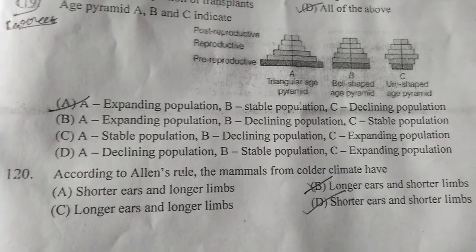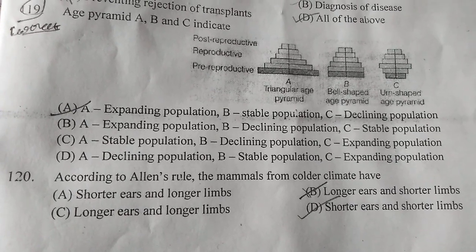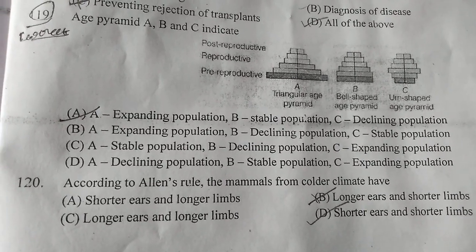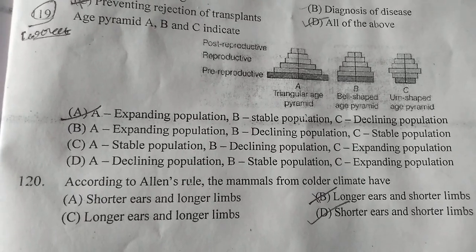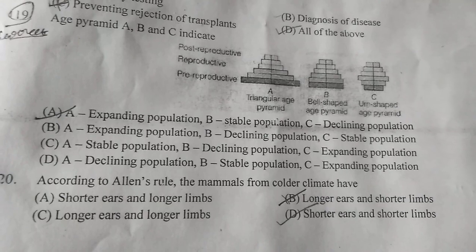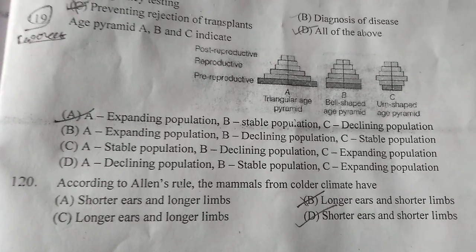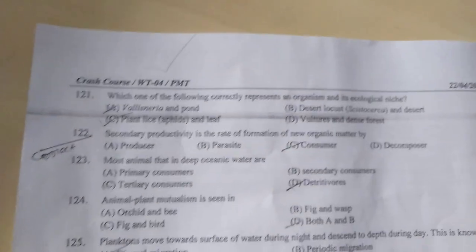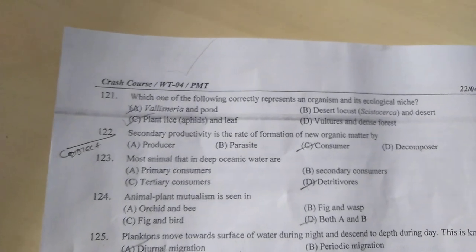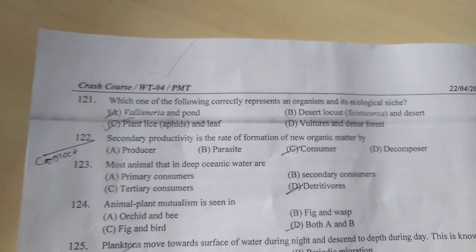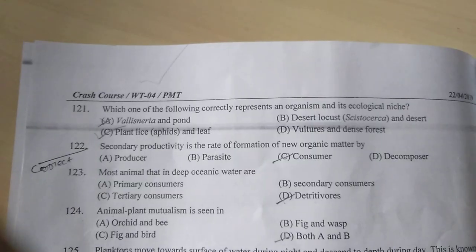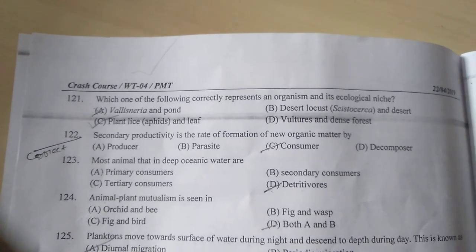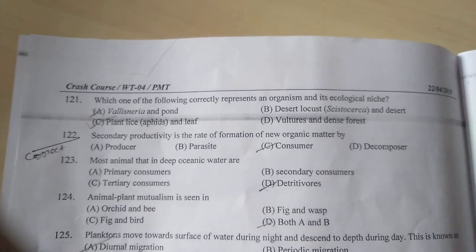Question number 120: According to Allen's Rule, the mammals from colder climates have — D is the answer — shorter ears and shorter limbs. Question number 121: Which of the following correctly represents an organic matter — C is the correct answer. Question 122: Secondary productivity is the formation of new organic matter by — C is the correct answer.